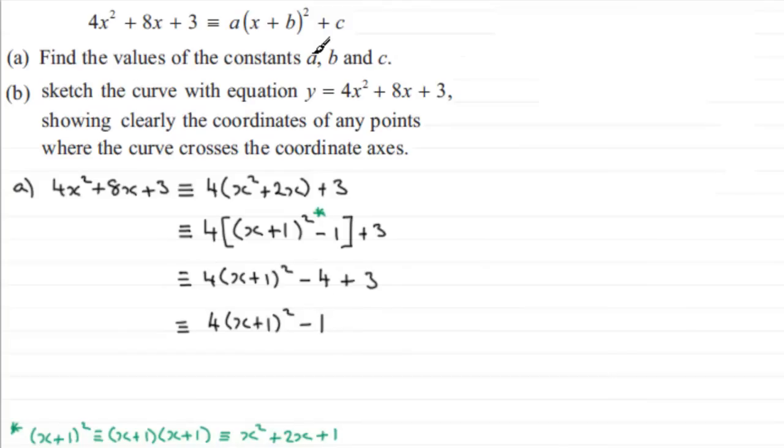So it says find the values of the constants a, b, and c. And a is clearly going to be 4, b is going to be the 1, and c is going to be minus 1. But when I'm doing questions like this, I always like to say that this is identical to what we're asked to show, which in this case is a times (x + b) all squared plus c. And then I write where a equals 4, b equals 1, and c equals minus 1. Okay? I just like that style rather than just saying a equals 4, etc. Okay?